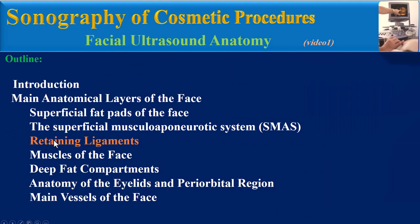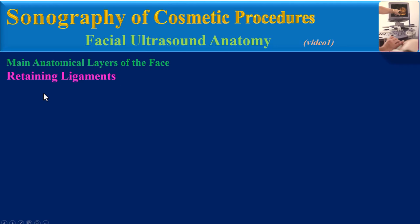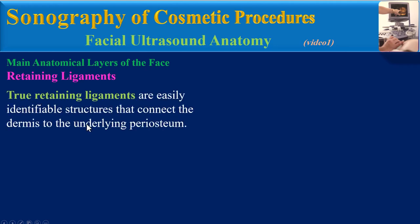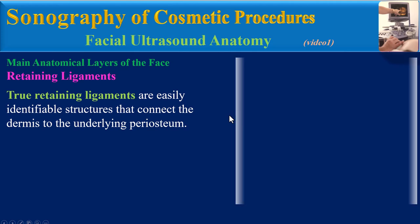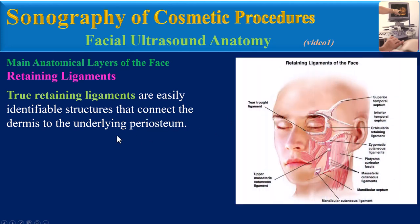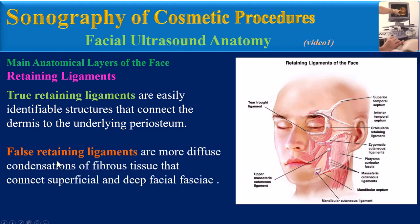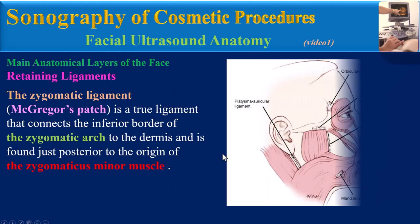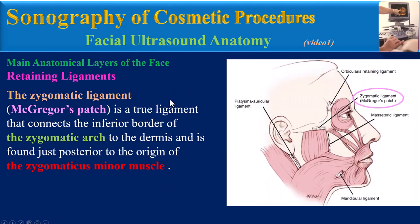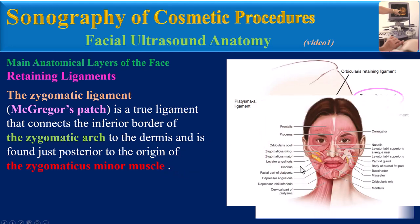Retaining ligaments: we have two groups — true and false. True retaining ligaments are easily identifiable structures that connect the dermis to the underlying periosteum. False retaining ligaments are more diffuse condensations of fibrous tissue that connect superficial and deep facial fasciae. The zygomatic ligament, or McGregor's patch, is a true ligament that connects the inferior border of the zygomatic arch to the dermis and is found just posterior to the origin of the zygomaticus minor muscle.